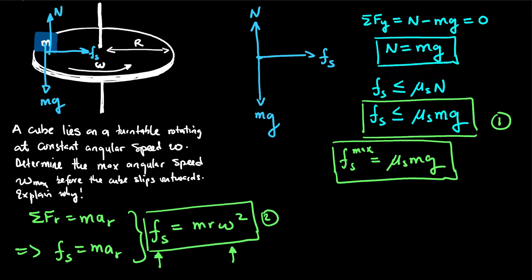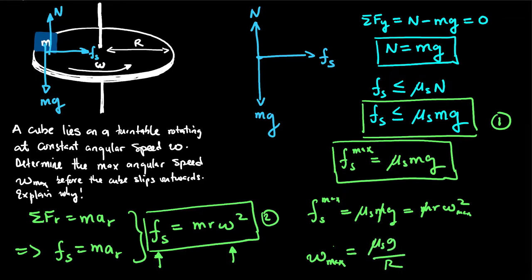So, that means that f s max, which is equal to mu s mg, will be equal to mr omega max squared. The m's will cancel, and the maximum angular velocity that we can have and the system will not skid is given by this particular expression.